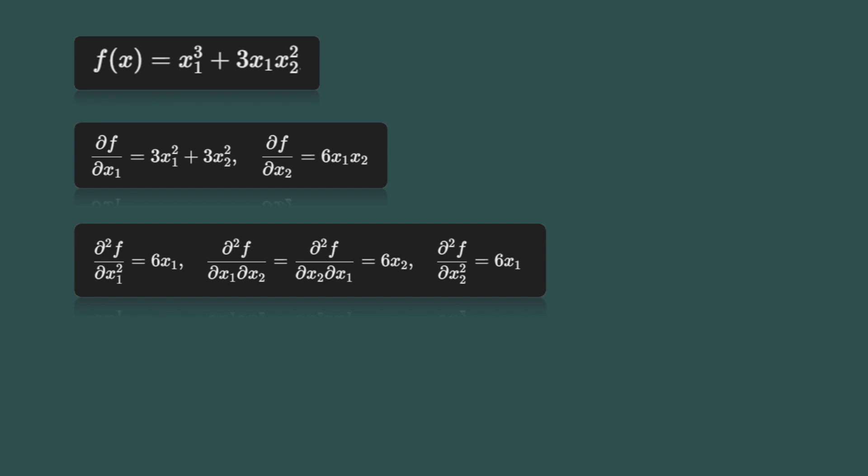Now, let's organize these into the Hessian matrix. The Hessian is a 2 by 2 square matrix. The first row contains 6 times x1 and 6 times x2. The second row contains 6 times x2 and 6 times x1. This matrix provides second-order derivative information for the function. It helps us analyze the curvature of the function and determine the nature of critical points, such as minima, maxima, or saddle points.